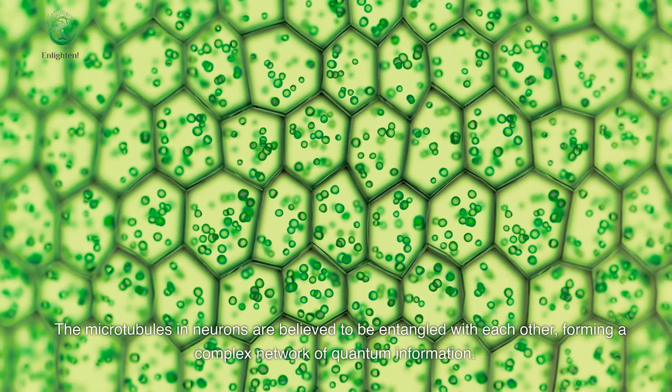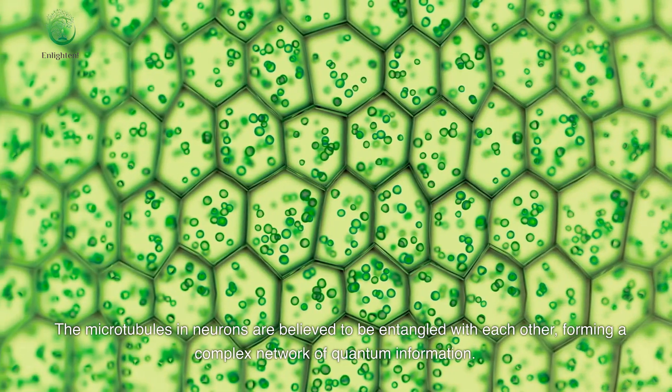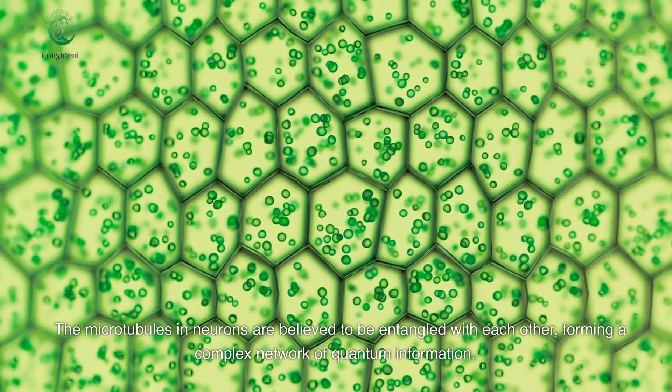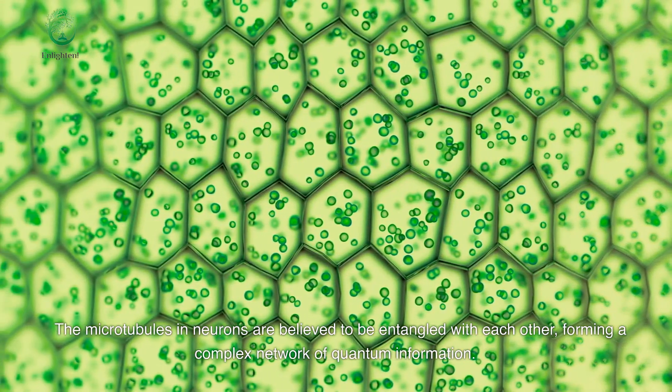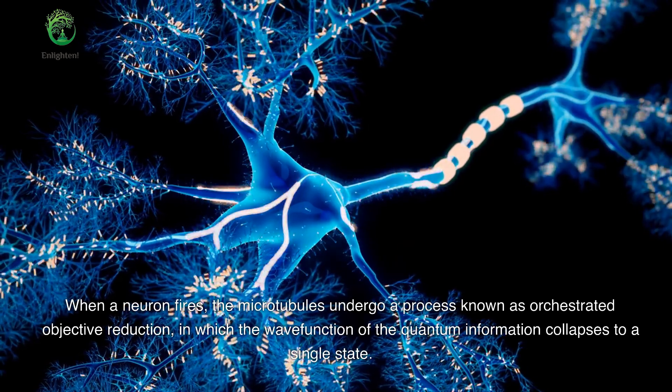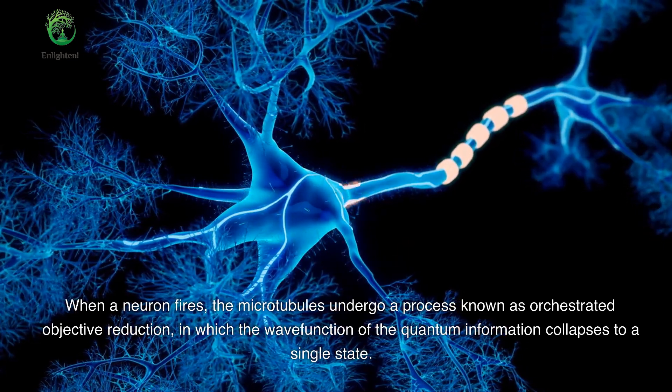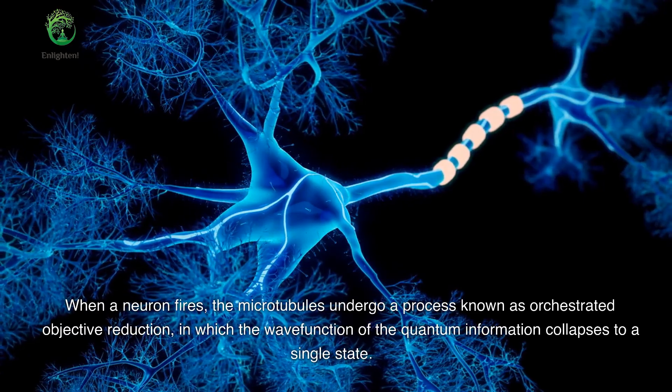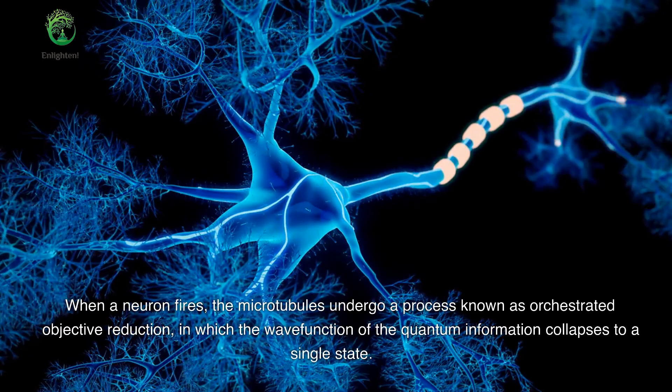The microtubules in neurons are believed to be entangled with each other, forming a complex network of quantum information. When a neuron fires, the microtubules undergo a process known as orchestrated objective reduction, in which the wave function of the quantum information collapses to a single state.